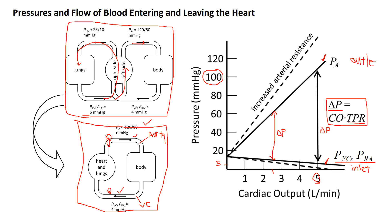The outlet pressure — the arterial pressure — changes much more steeply than the inlet venous pressure curve. The difference in these slopes is due to the difference in stiffness of arteries versus veins. When flow increases, volume shifts from the venous side to the arterial side. A given change in volume causes a bigger increase in arterial pressure than a corresponding decrease on the venous side, because the arteries are stiffer than the veins.